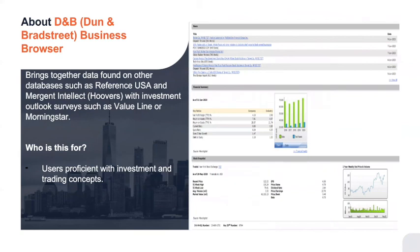Lastly, we're going to look at D&B — Dun & Bradstreet Business Browser. They're a very reputable company that's been providing quality business research to libraries and corporations for a long time. What's unique is that it brings together information similar to Reference USA or Hoover's — executive leadership, branch headquarters locations, employee size, gross annual revenue and sales — but it also offers investment projections and stock snapshots further down. So you get both the company profile and stock and investment information, which is more than what you'd find on Reference USA alone.